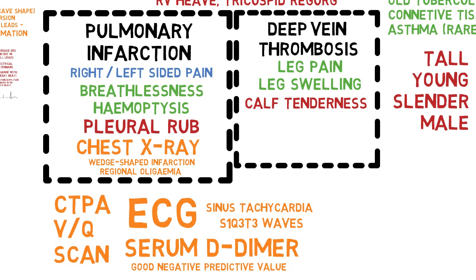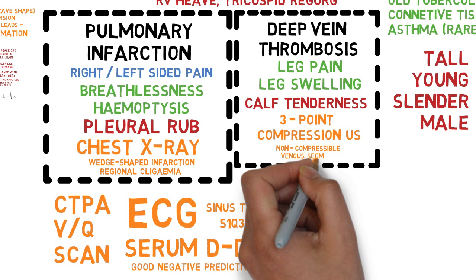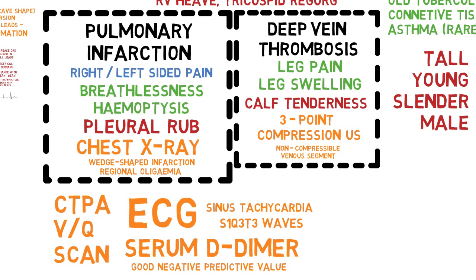Another non-invasive investigation is three-point compression ultrasound. This is diagnostic enough to diagnose deep vein thrombosis but not pulmonary embolism. The hardened venous segment will not be compressible as expected, since venous walls are normally more flexible than arterial walls. For pulmonary embolism, the two investigations with high diagnostic value are CT pulmonary angiogram and VQ scan.